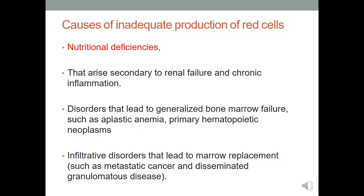The causes of inadequate production of red cells include nutritional causes, renal failure, chronic inflammation, bone marrow failure, or infiltrative disorders leading to marrow replacement. Whenever there is cancer, cancer cells disseminate into the bone marrow and replace the normal bone marrow tissue, causing inadequate production of red cells. In this lecture, we will cover only anemia related to nutritional deficiency.